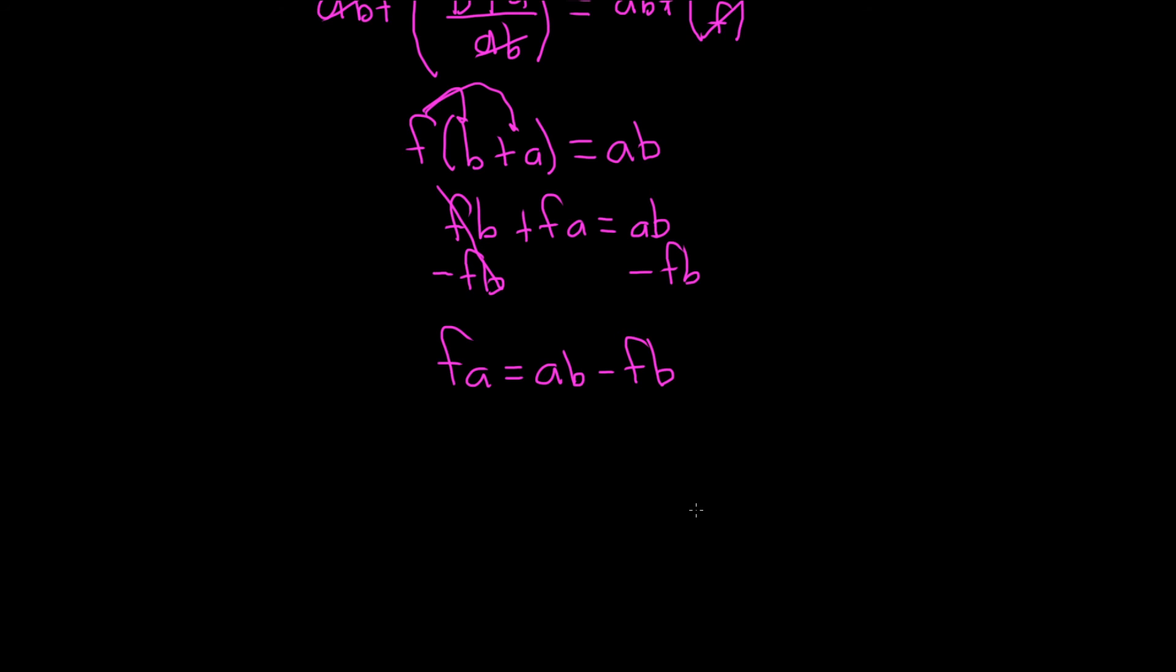And so now we finally have all of the b's on one side. So now we can actually pull out a b. So we have fa equals b. And then parentheses looks like it's going to be a minus f. Yeah, that'll do it.